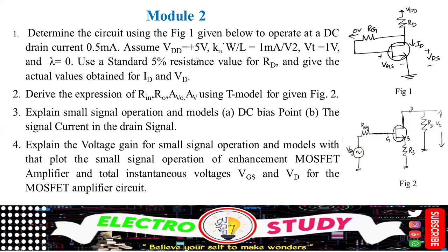You should know the characteristics and relations for that circuit question. Next, derive an expression for Rin, Ro, Av, and Vo using the T model for figure number 2. For figure number 2, you have to derive those expressions.